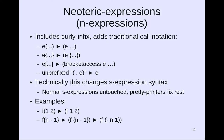Here are some examples of Neoteric expressions. f(1, 2) is simply an abbreviation for (f 1 2). f{n - 1} is an abbreviation for (f (- n 1)).